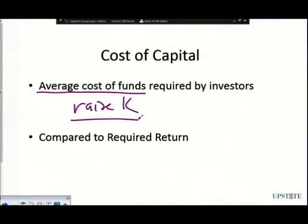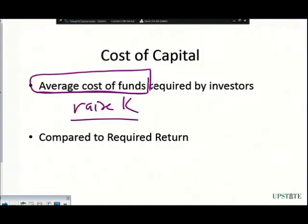Capital isn't free. If I borrow money, I don't get to pay it back at 0% interest. If I issue stock, I don't just get to keep all the profits — I have to give something up for that. When we talk about cost of capital, it's the average cost of the funds required by investors. This is pretty much the same as the required return: in order for an investor to loan me money or purchase equity in my company, I have to give them a return adequate to compensate them for their risk. That required return goes into the average cost of funds.